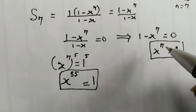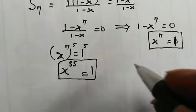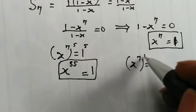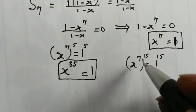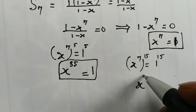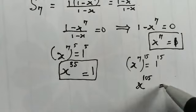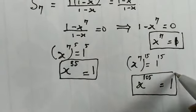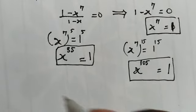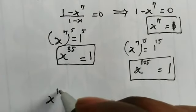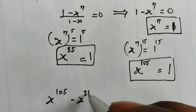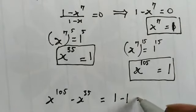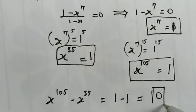Since x to the power of 7 equals 1, we raise both sides to the power of 15. We get x to the power of 7 times 15, which is x to the power of 105, equal to 1 to the power of 15, which is 1. So the expression x to the power of 105 minus x to the power of 35 equals 1 minus 1, which is equal to 0. That is the solution.